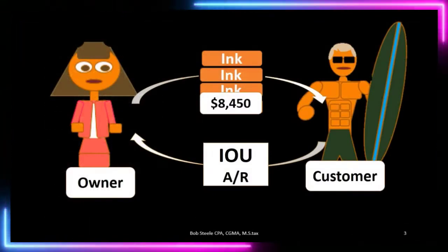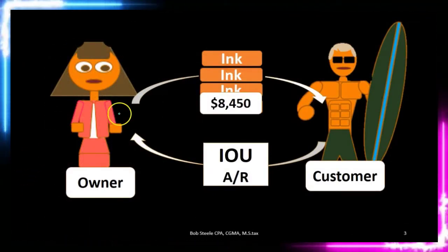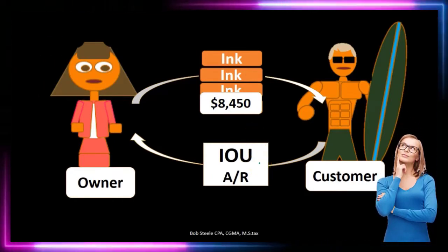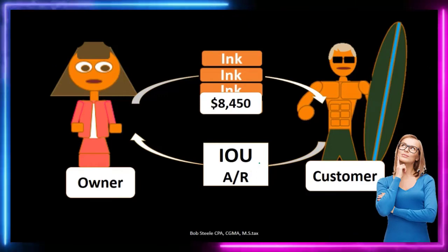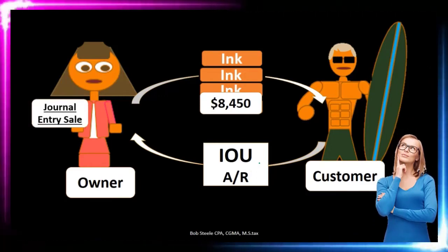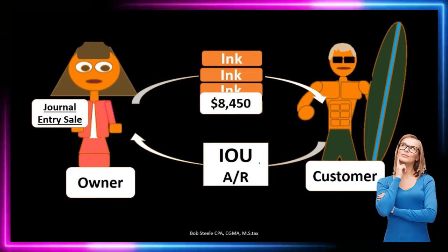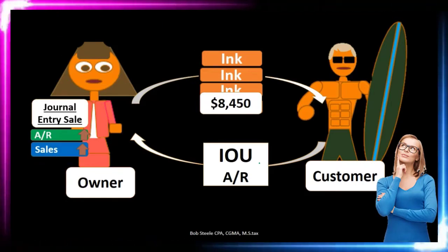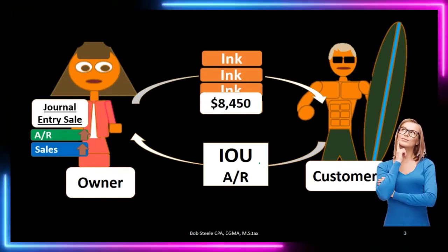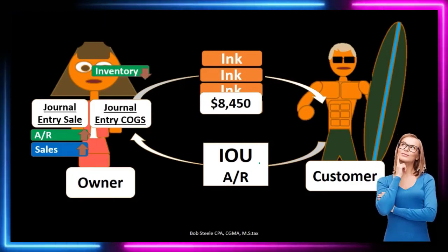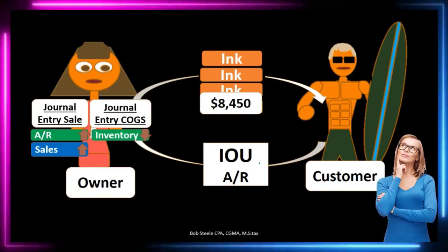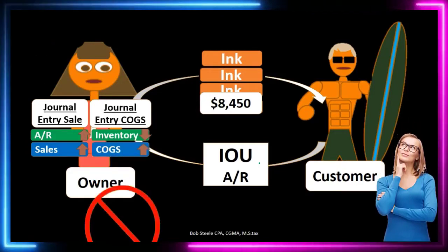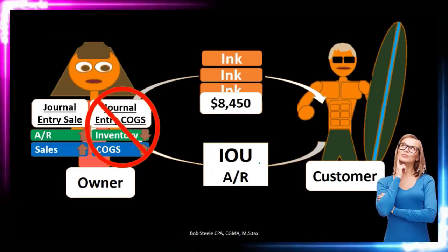Let's take a look at an example. At the point of sale, we're selling ink to the customer and receiving an IOU. There are two halves to the transaction. One is the sale side — even if we were a service company — which would be an increase in accounts receivable and an increase to sales revenue. The other half is the cost of goods sold side, meaning inventory goes down and cost of goods sold goes up. This second journal entry would not be recorded at the point of sale under a periodic inventory system.